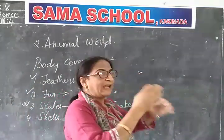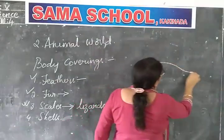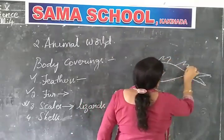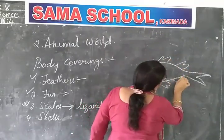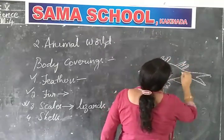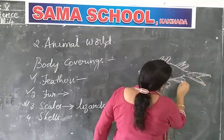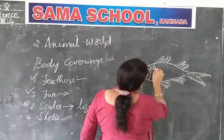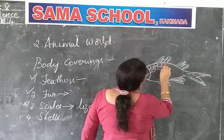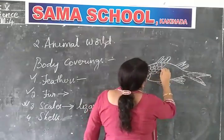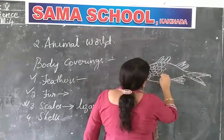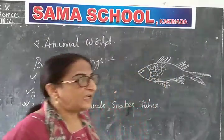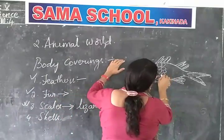The scales are overlapped on one another, and this helps the body to reduce the loss of water from their bodies. These scales help in reducing the loss of water. Snakes also have scales on their bodies, and lizards also have scales on their bodies.